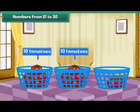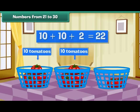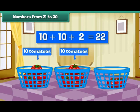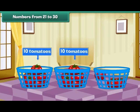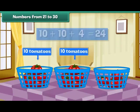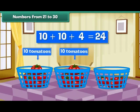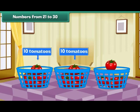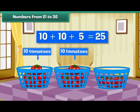Place one more tomato in the third basket. We have two tens and two — that is 22 tomatoes. Similarly, two tens and three make 23. Two tens and four make 24. Two tens and five make 25.